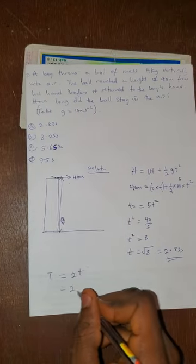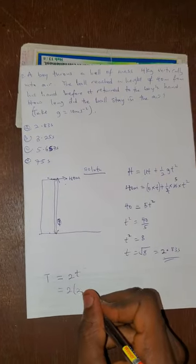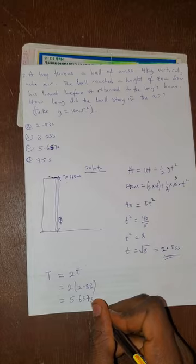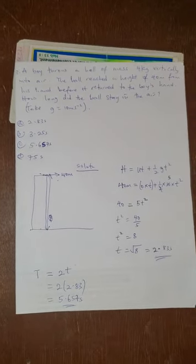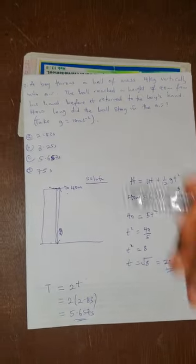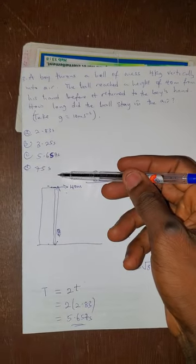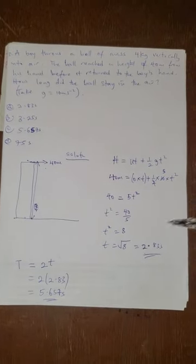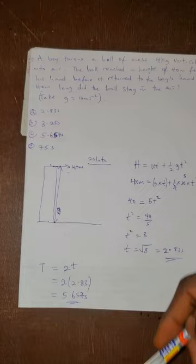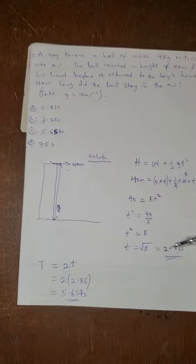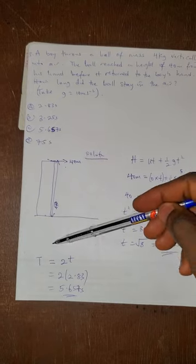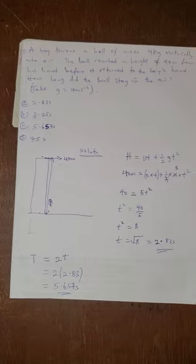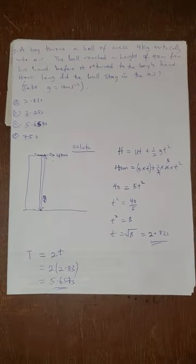The time of flight is 2t because what goes up must come down. The ball uses 2.83 seconds going up and the same time coming back down, giving a total of 5.657 seconds in the air.